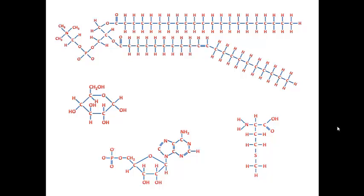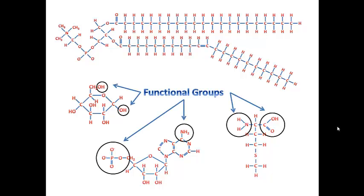Now, as we look closely at all these different organic molecules, we notice they're made of more than just carbon backbones — there are other elements involved, and they seem to form particular structures. We call these other structures functional groups, and it's these functional groups that are going to give the different categories of organic molecules their chemical properties.